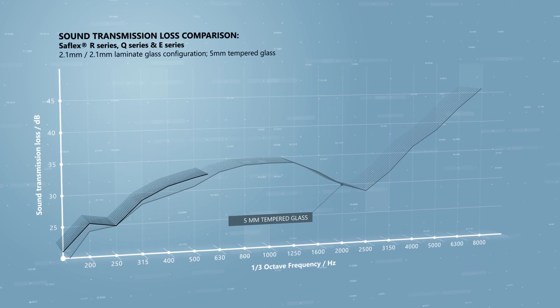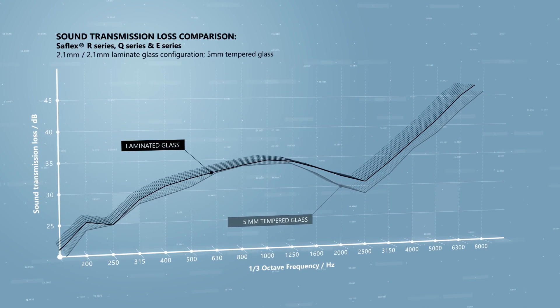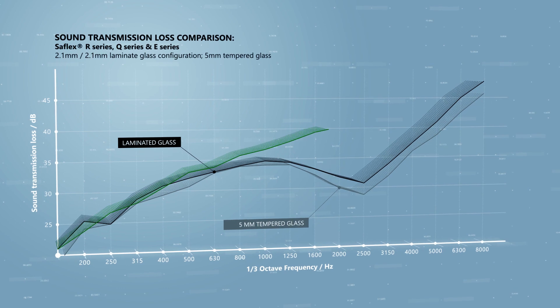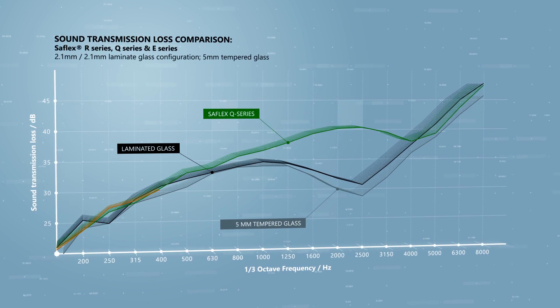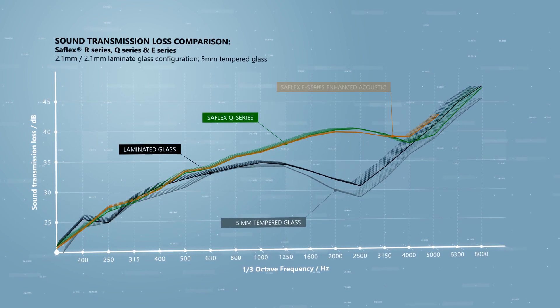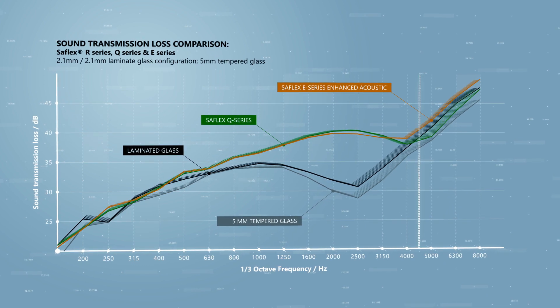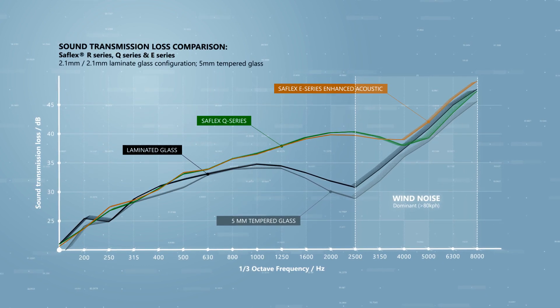The SafeFlex E-series enhanced acoustic inner layer provides the same level of benefit as the Q-series in the mid frequencies while also providing an additional reduction of 2 decibels in the high frequency range that is typically associated with wind noise at higher speeds.